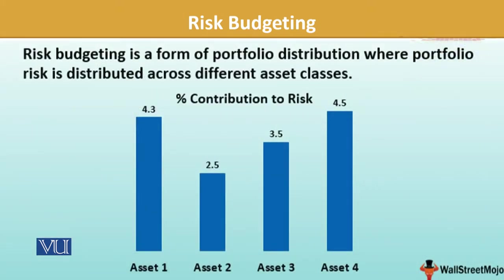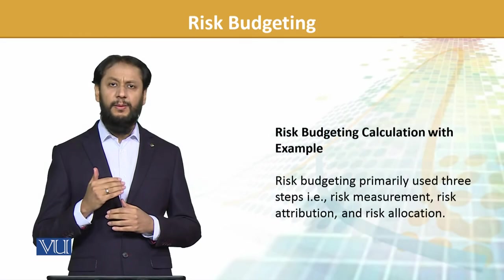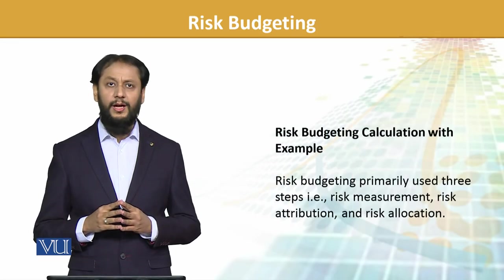This is a simple graphical representation. Risk budgeting is a form of portfolio allocation where the portfolio is distributed across different asset classes. We can see how much asset one is contributing, how much asset two is contributing, how much asset three is contributing — so this way we have a clear understanding of what each component is doing. Asset one could be equity, asset two could be bonds, or they could be individual stocks.